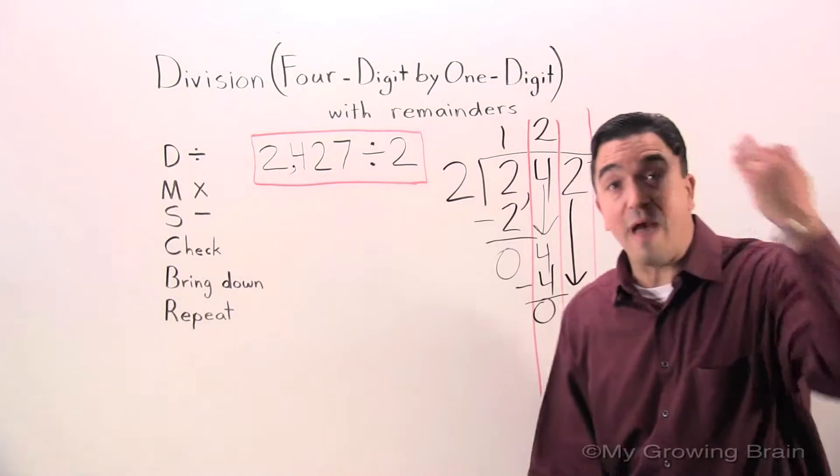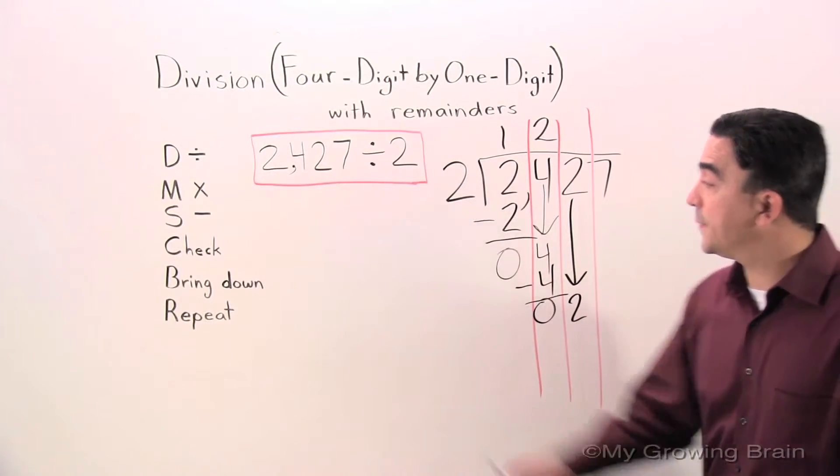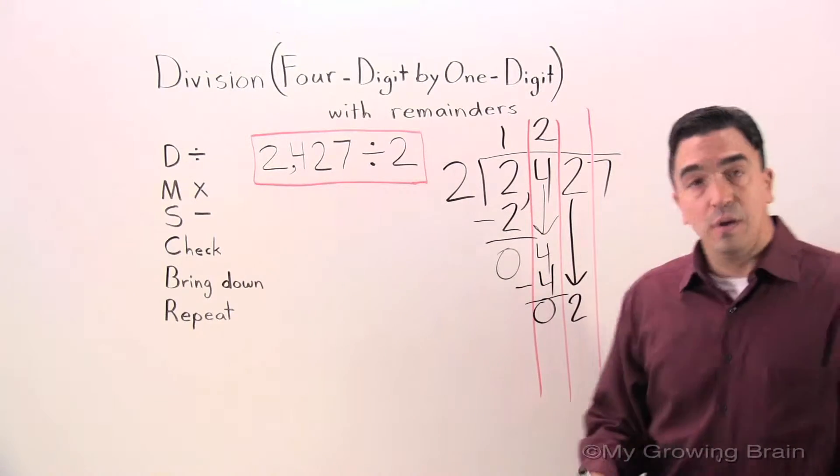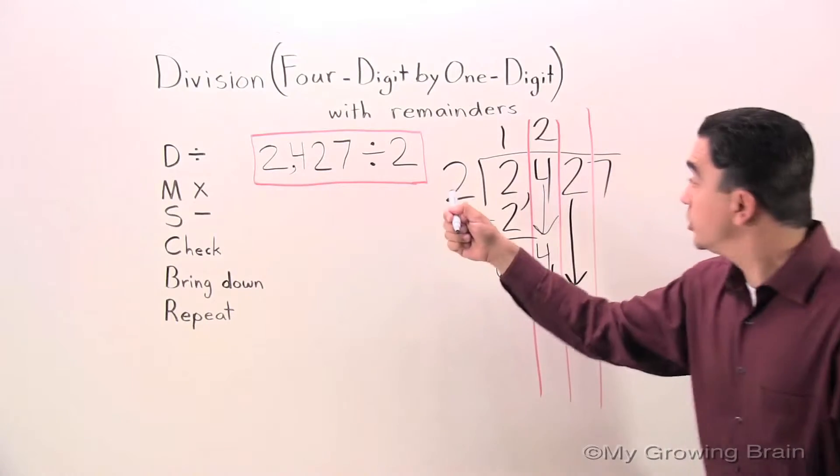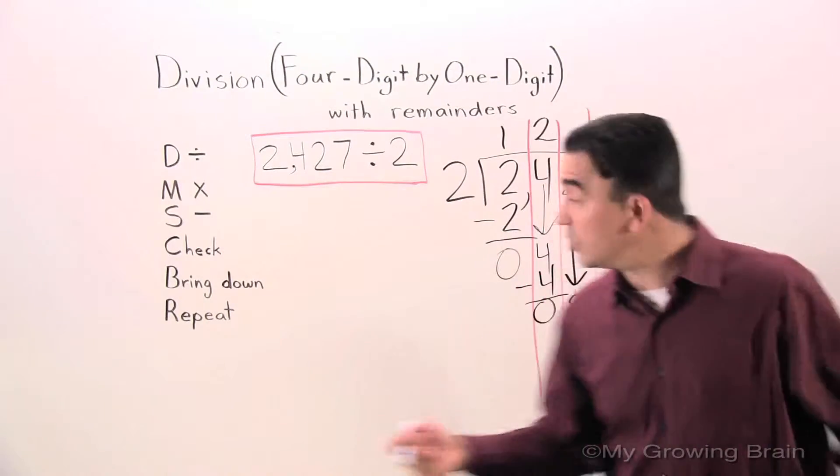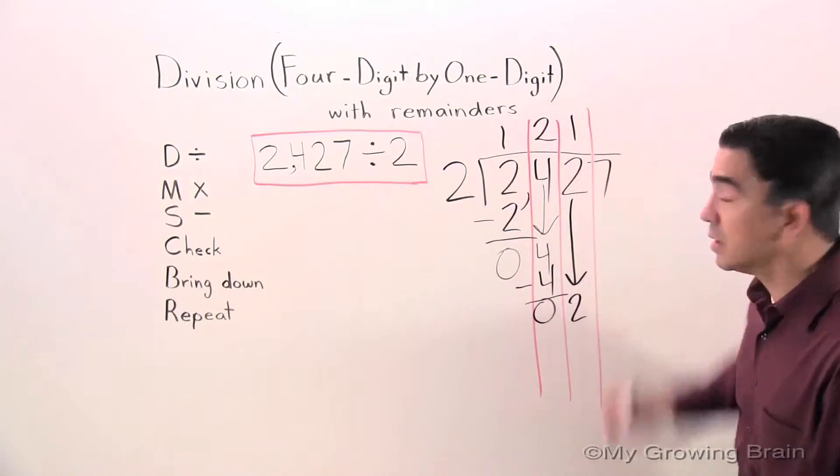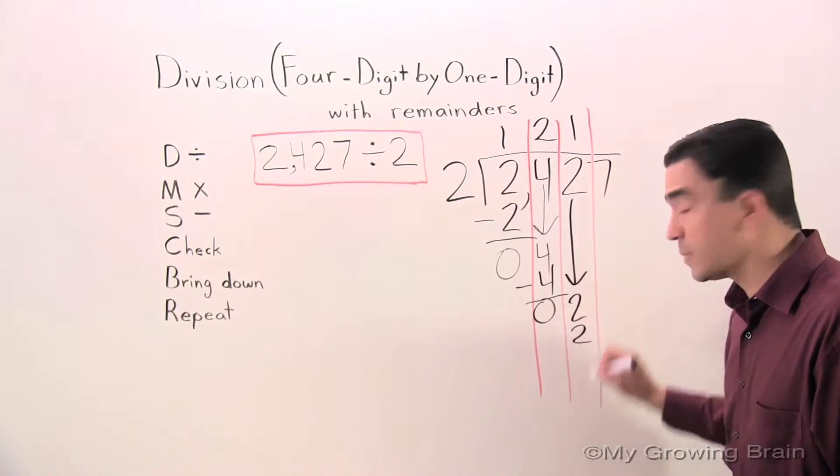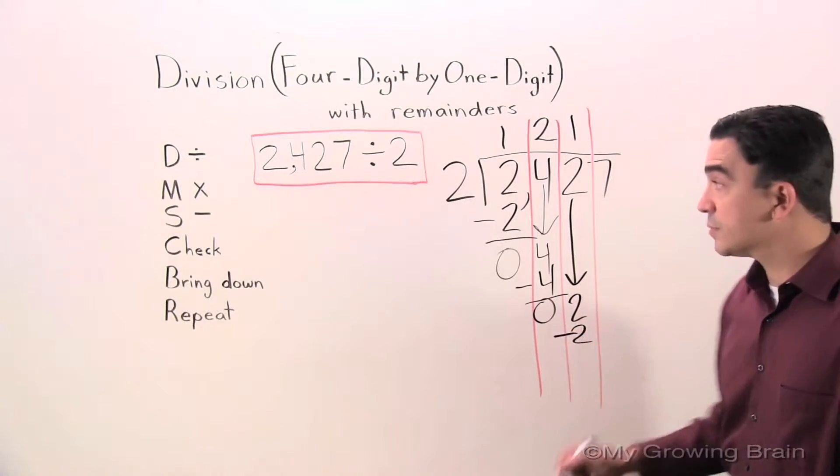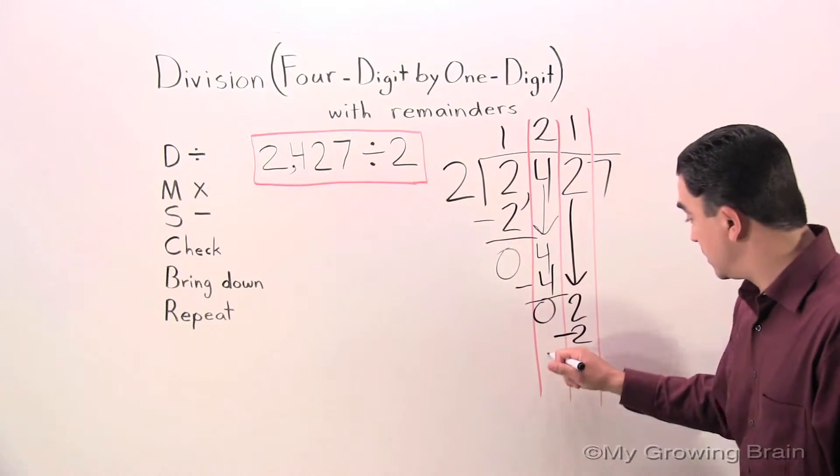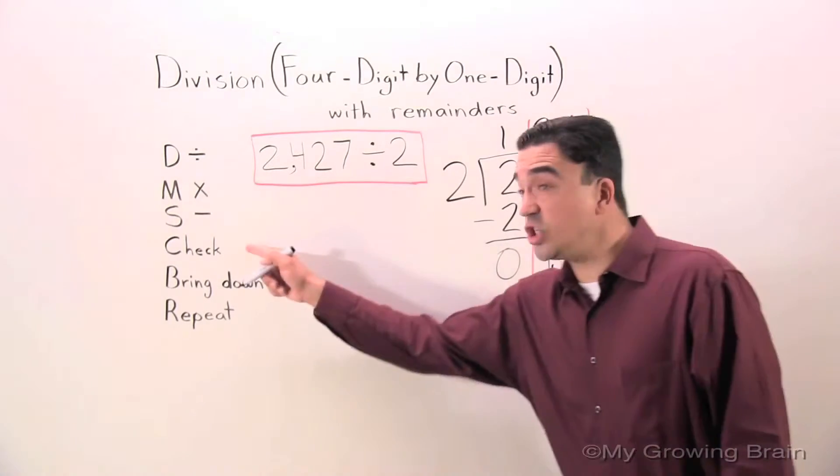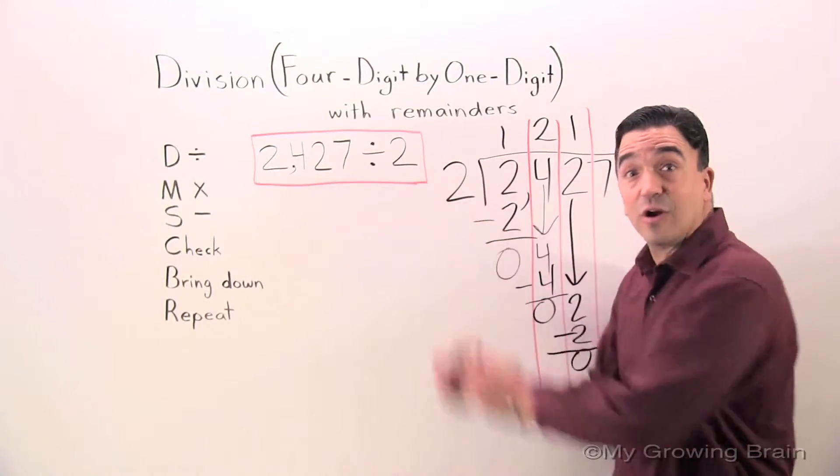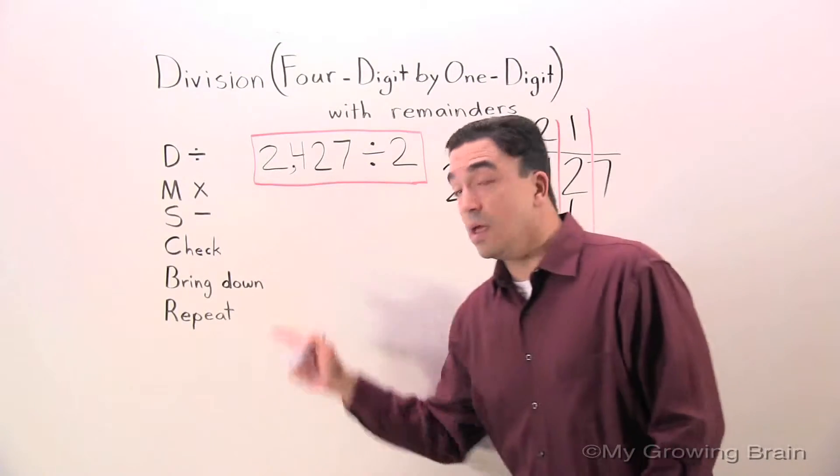Does this problem ever end? Here we go. Bring down. Repeat the process. Back to the top. 2 into 2, or 2 divided by 2. 1. Multiply. 2 times 1? 2. Subtract. 0. Check. This is less than the divisor. Keep on going. Bring down.